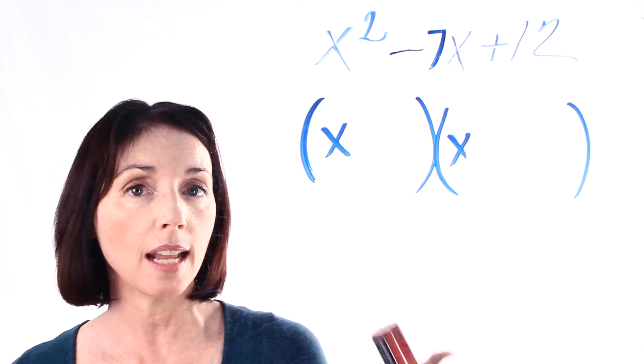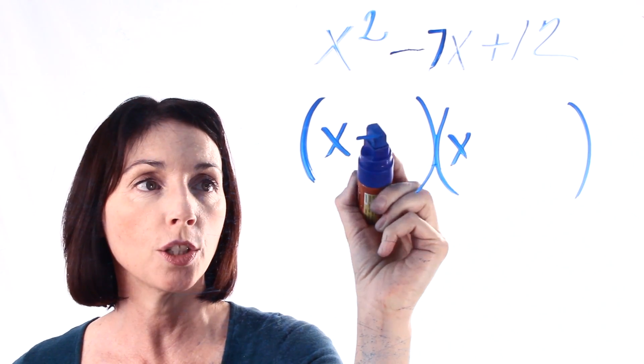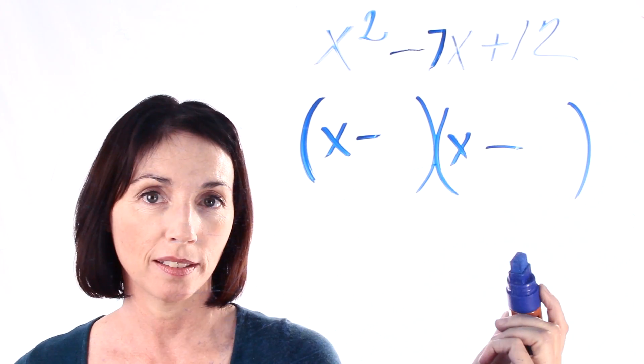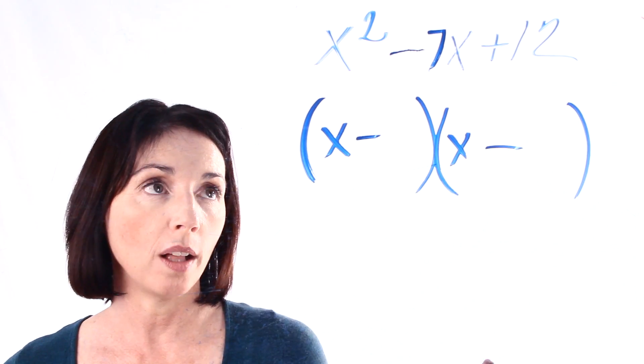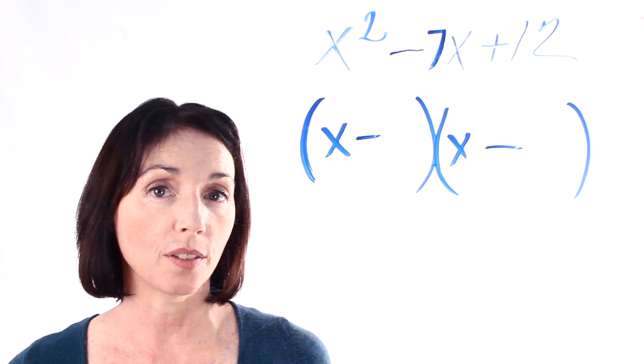Since this is a negative sign though it means that we're going to be multiplying two negatives together. So what we need are two numbers that multiply together to be 12 and add together to be negative 7.